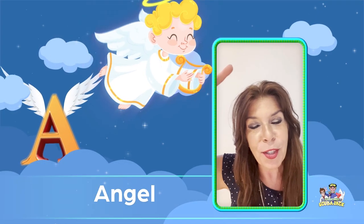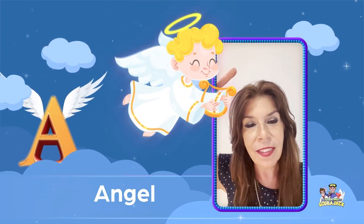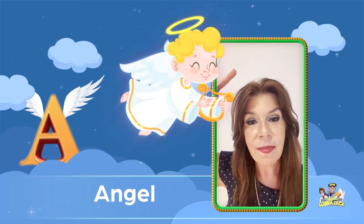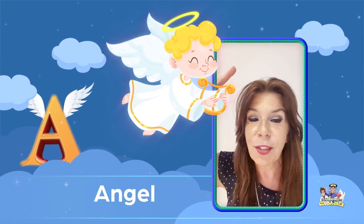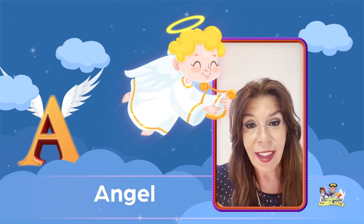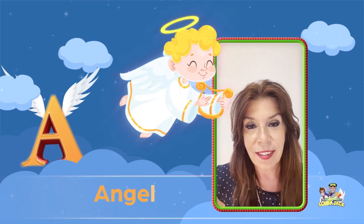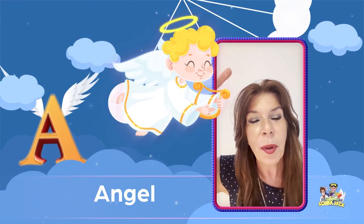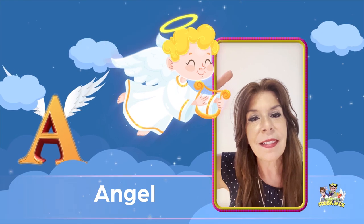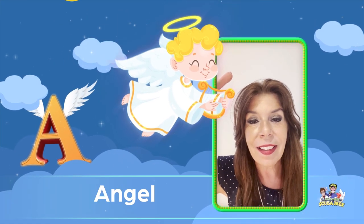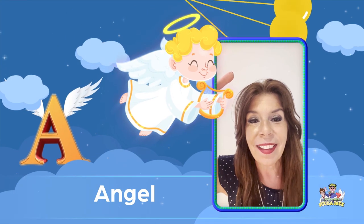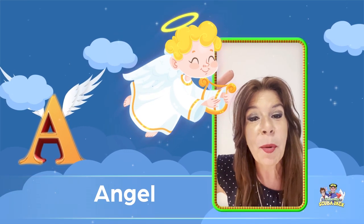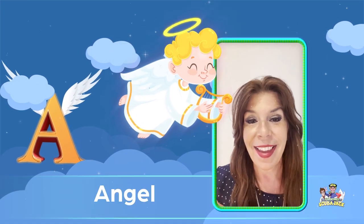Hey kids, our next word is angel. Do you see the angel above my head? She's so pretty. I have an angel on the top of my tree during Christmas. Can we say angel together? Angel. Let's do it again — angel. What color is her dress? It's white. What color are her wings? White. What color is her hair? Yellow. I think she's beautiful, and I think you're beautiful too! Angel.